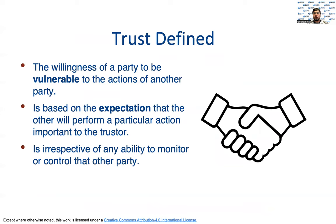So what is trust? We all know what it feels like, but it can be tricky to define subjectively. Roger C. Mayer and the other authors of an integrative model of organizational trust define it as the willingness of a party to be vulnerable to the actions of another party. They continue their explanation saying this willingness is based on certain expectations that the other will perform a particular action, and that this willingness is completely separate from any ability to monitor or control the other party.